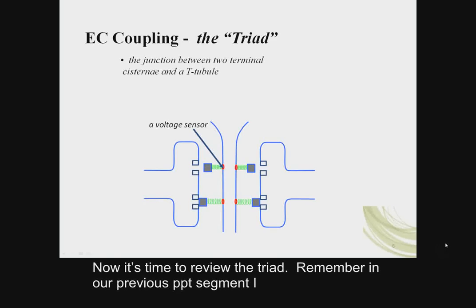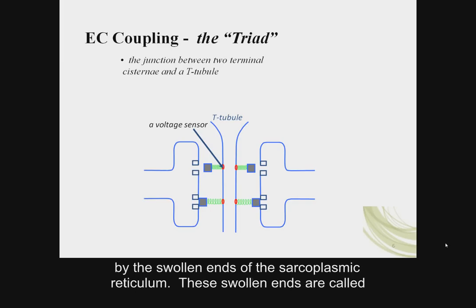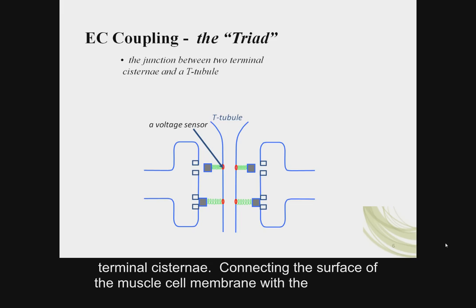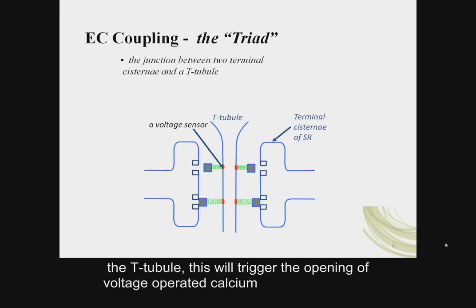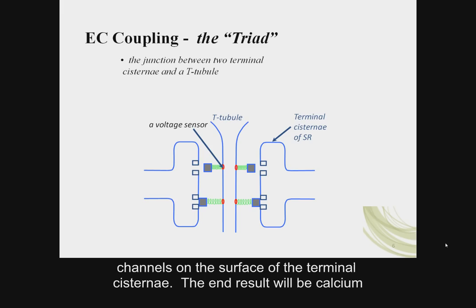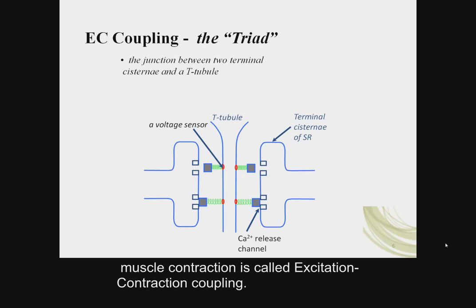Now it's time to review the triad. A triad consists of a T-tubule — the invagination of the cell membrane — surrounded by the swollen ends of the sarcoplasmic reticulum, called terminal cisternae. Connecting the surface of the muscle cell membrane with the terminal cisternae is a voltage sensor. When the action potential spreads down the T-tubule, this triggers the opening of voltage-operated calcium channels on the surface of the terminal cisternae. The end result is calcium leaving the sarcoplasmic reticulum to enter the sarcoplasm — this phase is called excitation-contraction coupling.